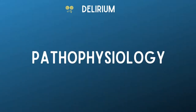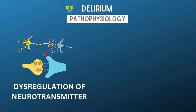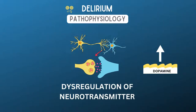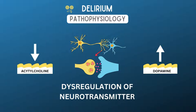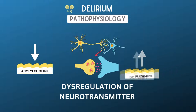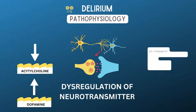The pathophysiology of delirium is not fully understood and is based on many hypotheses. Among them, dysregulation of neurotransmitters makes the most sense. Over time, the amount of neurotransmitters such as dopamine — also known as the happy hormone — is increased abnormally, and there will be a decreased level of acetylcholine. There is also involvement of other neurotransmitters such as glutamate, gamma-aminobutyric acid, serotonin, and endorphins.